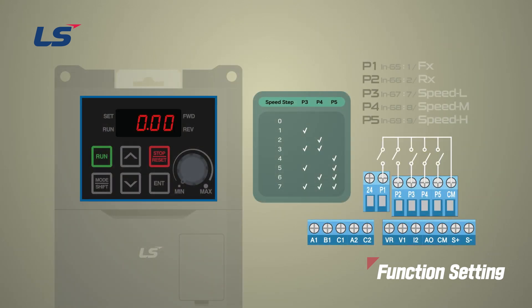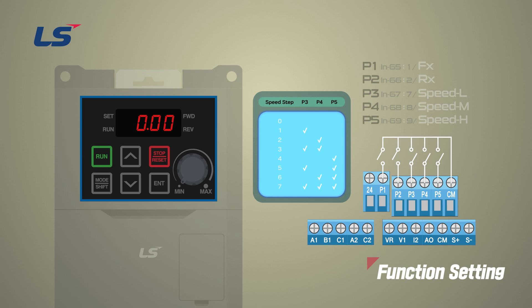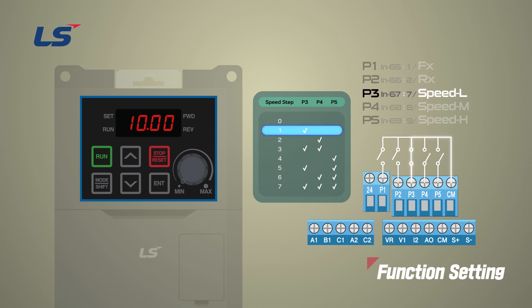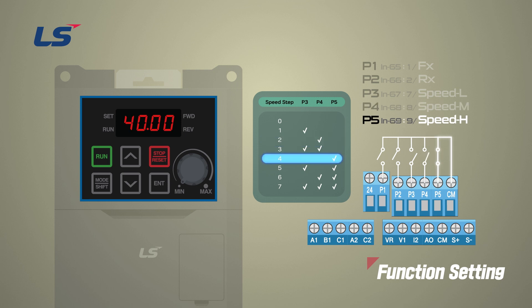Depending on the input sequence of digital input speed L, M, and H, the multi-step operation works in a binary sequence. You can check the input sequence for each stage through the IN90 DI status parameter. When the multi-speed frequency P3 terminal — speed L — is turned on, the first stage is activated. When the P4 terminal — speed M — is turned on, it is the second stage. When the P5 terminal — speed H — is turned on, it is the fourth stage.